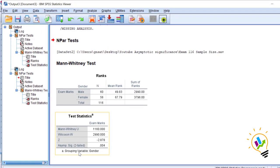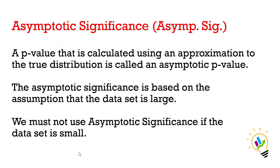Asymptotic significant value must be used when the sample size is large — that is, if the sample size is more than 30. The asymptotic p-value is calculated using an approximation to the true distribution. It is based on the assumption that the data set is large. We must not use asymptotic significant if the data set is small — that is, 30 or less than 30. Use only exact. If the sample is 30 or more, use asymptotic significant value.